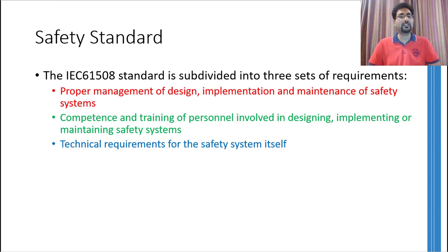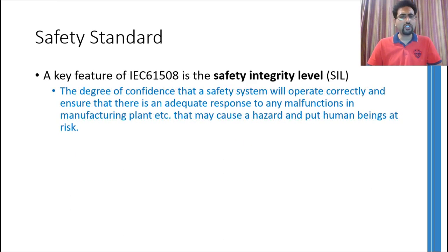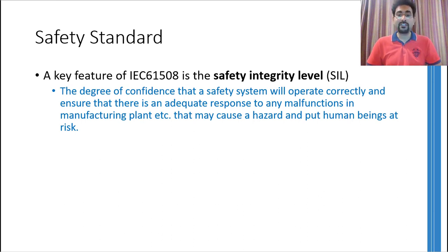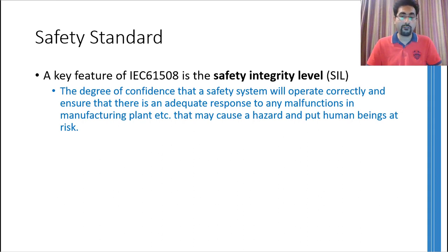Simple implementation of a safety system is not enough. By this standard, you have to hire or train workers to properly utilize the safety system, and there should be a proper mechanism for validating the competency of engineers or workers maintaining the whole safety system. A key feature of this safety standard is the Safety Integrity Level, abbreviated as SIL. This level defines the degree of confidence that a safety system will operate correctly — meaning the safety system will initiate the required response if something goes wrong.